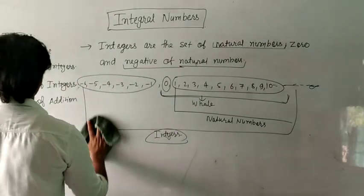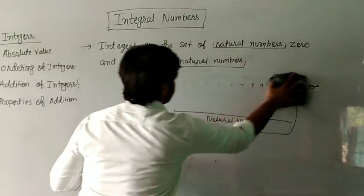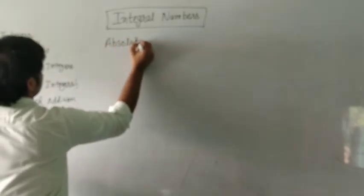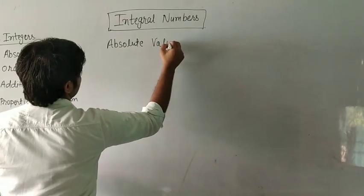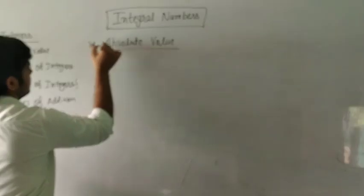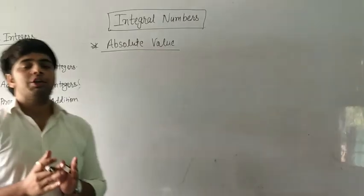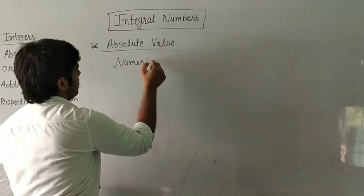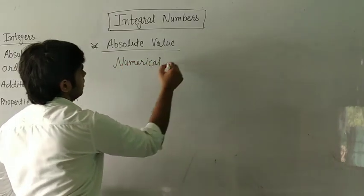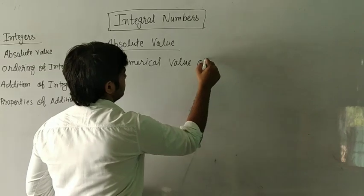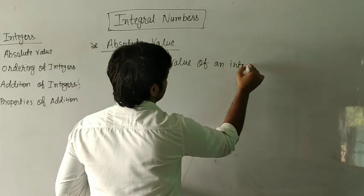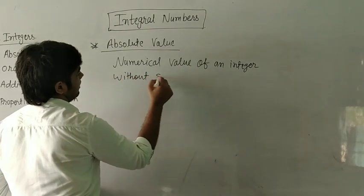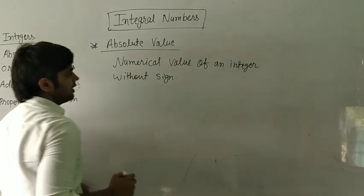Next is absolute value. Absolute value means the numerical value of an integer without its sign — the numerical value of an integer without sign.